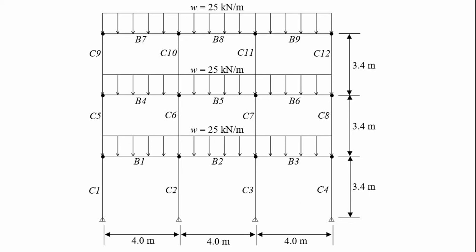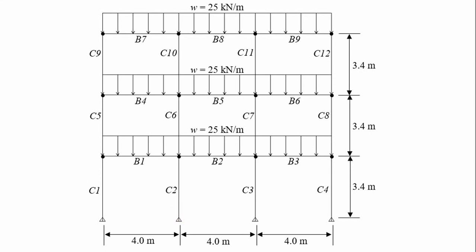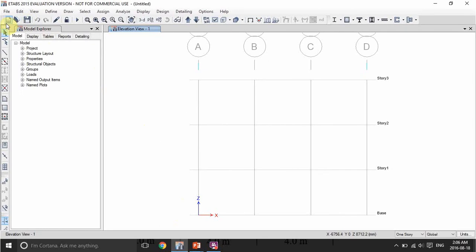Hello and welcome to my channel. In this tutorial I'm going to show you how to model a reinforced concrete two-dimensional frame using ETABS 2015 software. Let's take this frame for example — it consists of three bays, the span of each beam is four meters from center to center of the column, and the height of each floor is 3.4 meters. The load is applied on each beam with a value of 25 kilonewtons per meter, plus the self-weight of the structure.